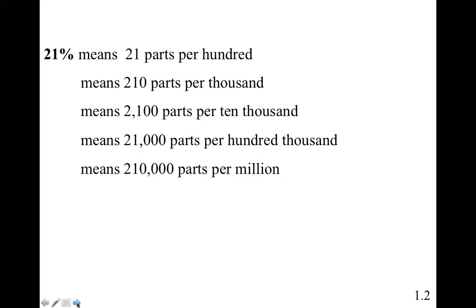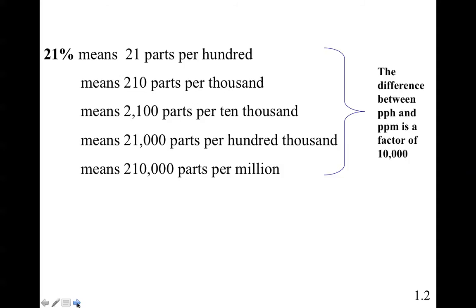Twenty-one percent means 21 parts per hundred, or 210 parts per thousand, 2,100 parts per ten thousand, 21,000 parts per hundred thousand, and equivalently 210,000 parts per million. The difference between parts per hundred and parts per million is a factor of ten thousand.